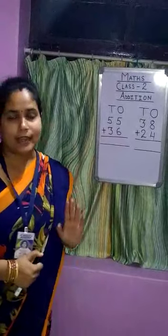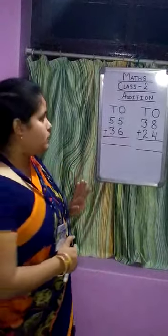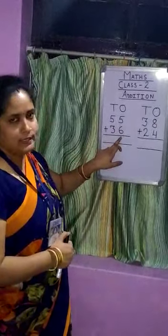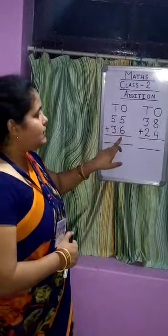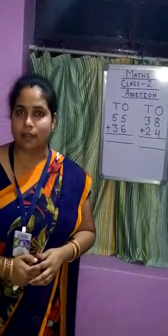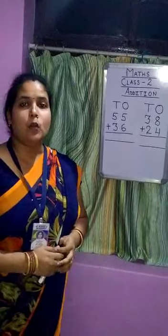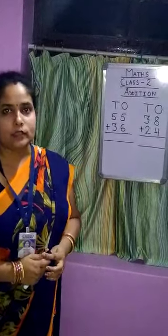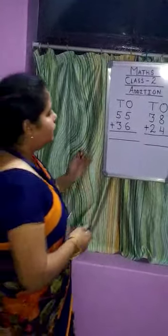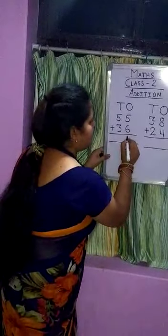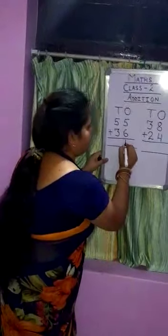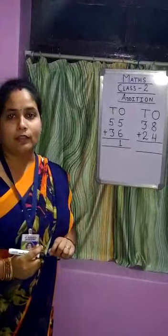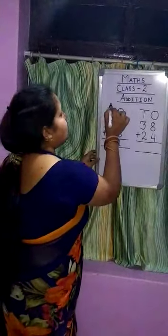Now we will start addition in the ones place. 5 plus 6 equals 11. 11 means 1 ten and 1 one. So we will write 1 in the ones place, and carry 1 to the tens place.